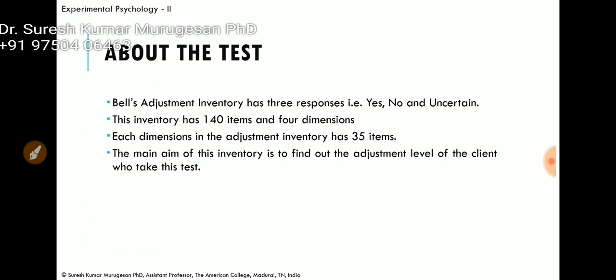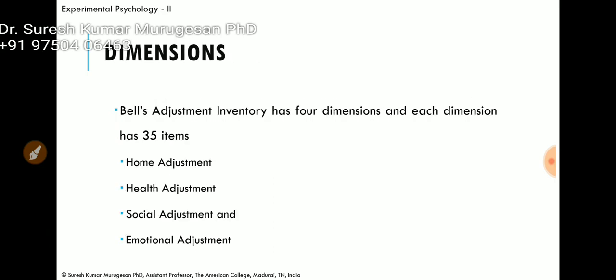Bell's Adjustment Inventory is one of the very commonly used adjustment inventories by most psychologists for knowing the adjustment level of the client. It has three responses: yes, no, and uncertain. This inventory has 140 items and 4 dimensions. Each dimension has 35 items. The four important dimensions are home adjustment, health adjustment, social adjustment, and emotional adjustment.